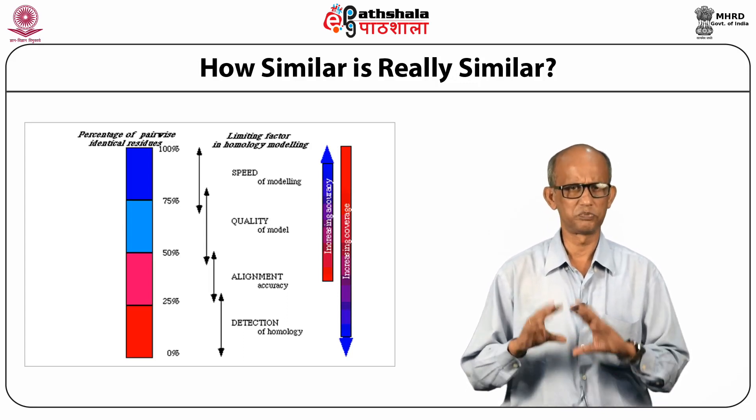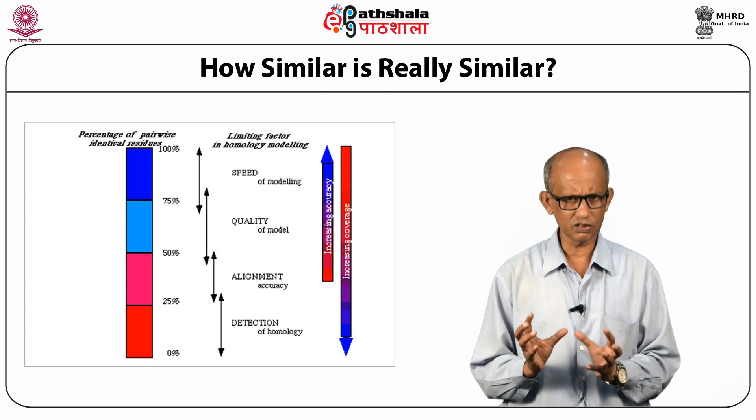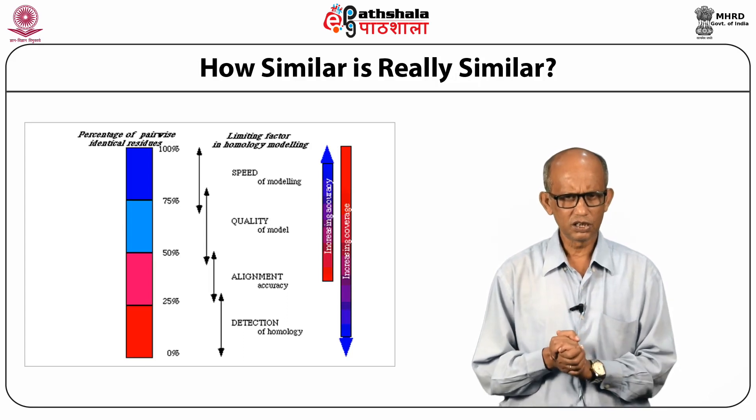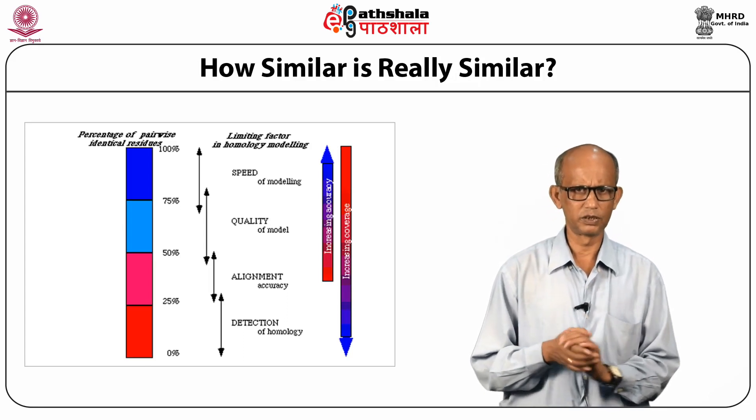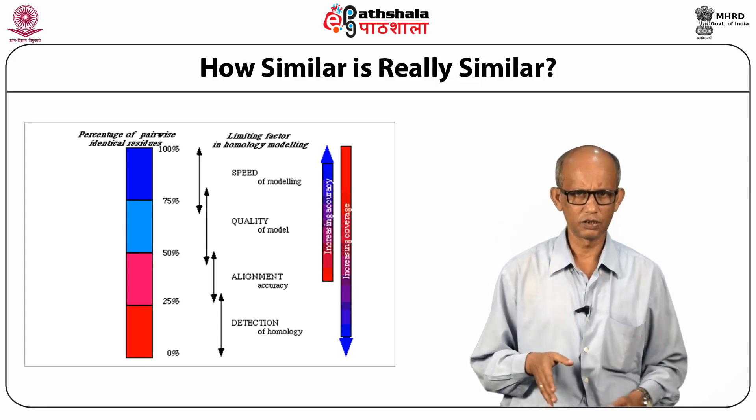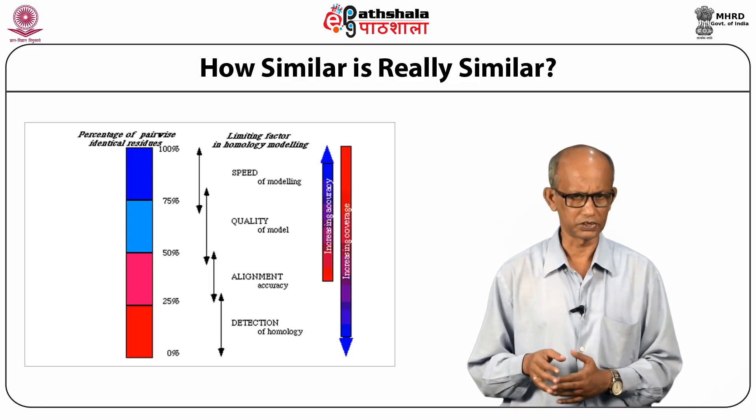Below 25% identity, it is really not suggested that you do any homology modeling. At such cases, you can barely detect homology, and it is preferable not to use it for modeling purposes.